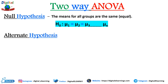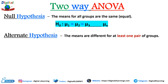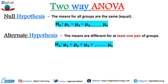The alternate hypothesis H1 means that the means are different for at least one pair of groups: mu1 ≠ mu2 ≠ mu3 ... ≠ mu_n. If any group mean is significantly different from the overall mean, the null hypothesis will be rejected.